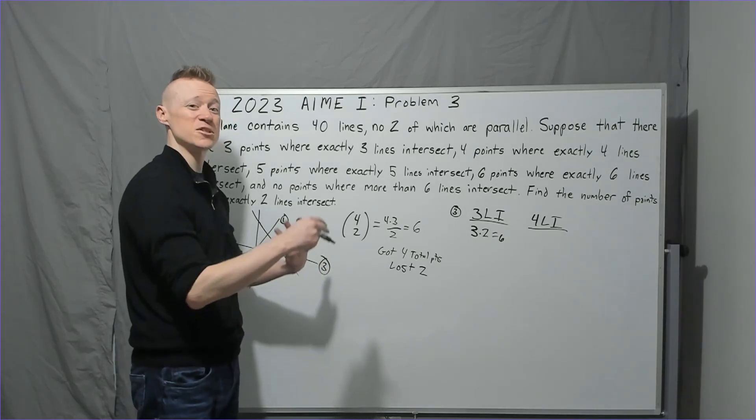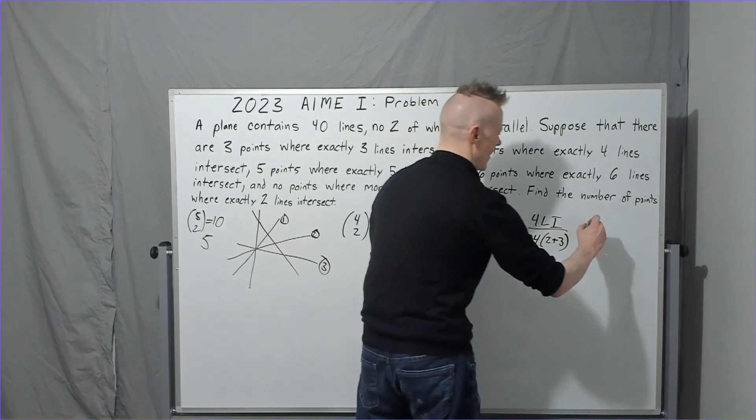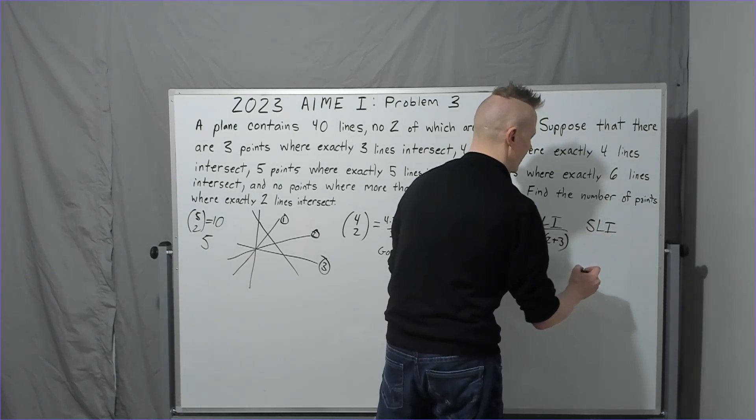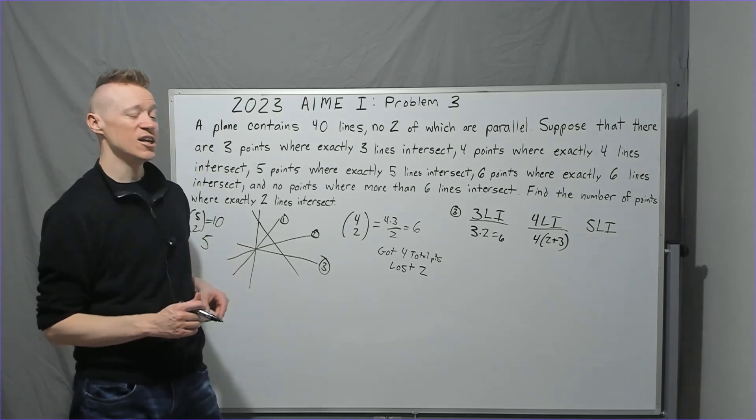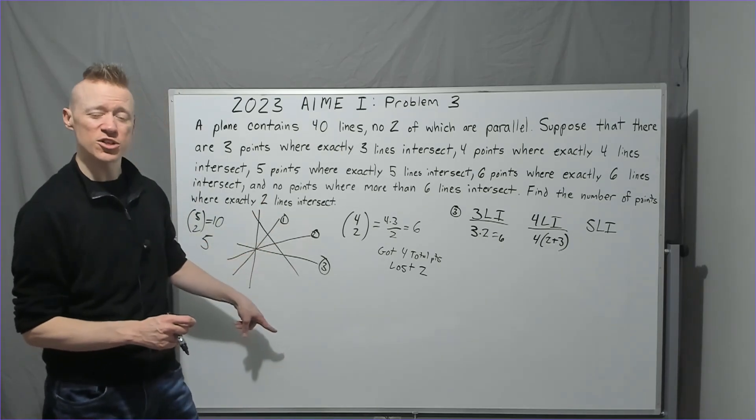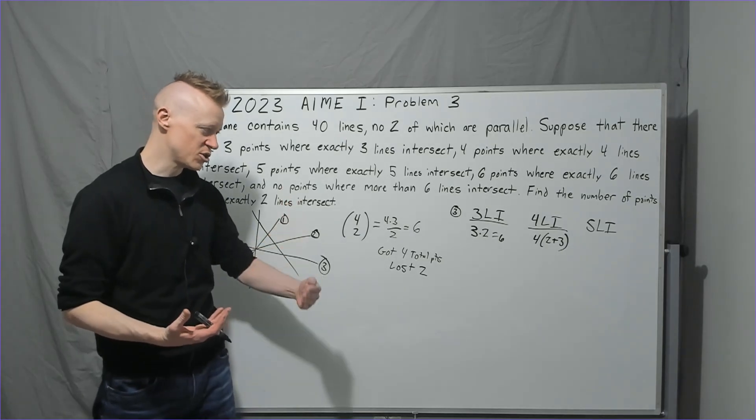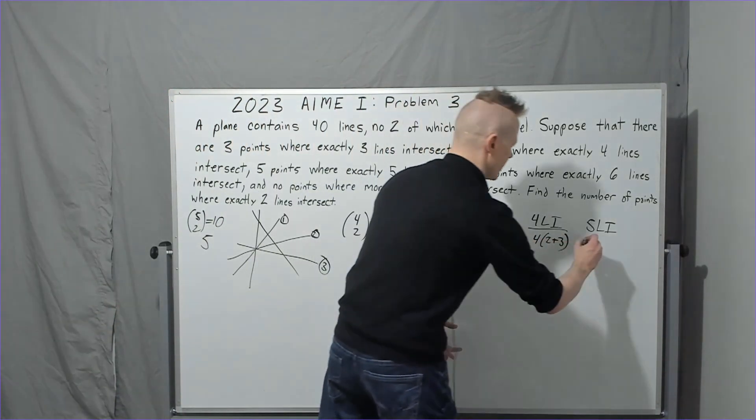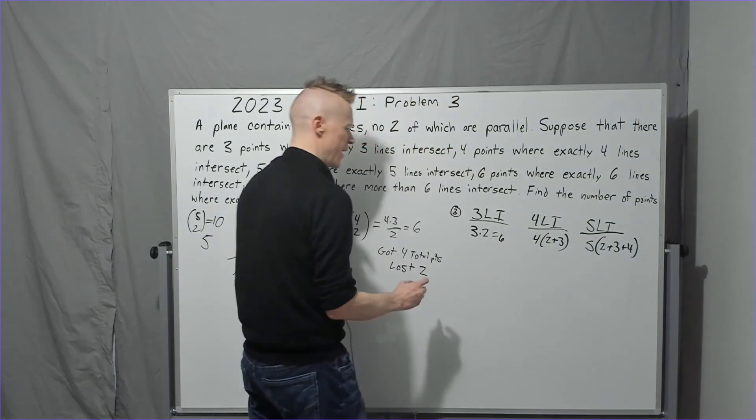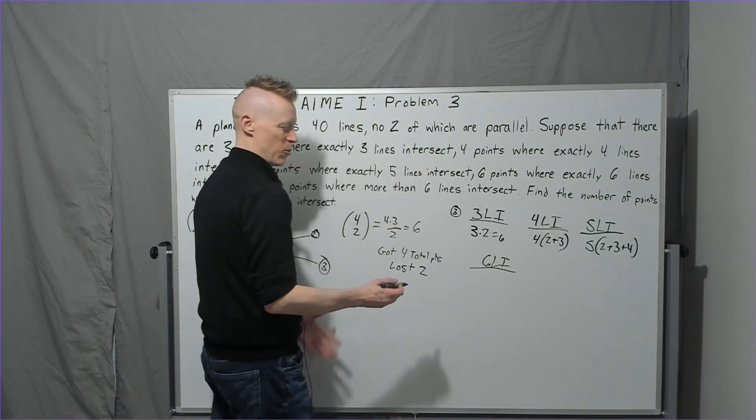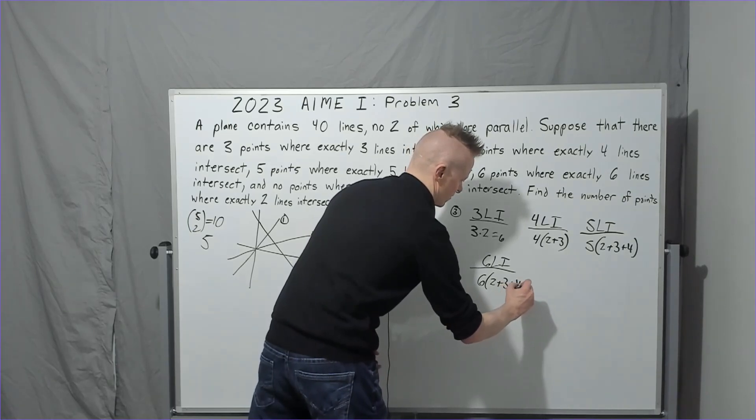So it's going to be four times two plus three. And we kind of have the idea now of what's going on for five lines of intersection. Every time you have that point or five lines intersecting at a single point, when that happens, you're not just going to lose the four that you just crossed over. You're also losing these two and these three that we had from the previous ones. So you're going to lose two plus three plus four. So we can say then that we have five times two plus three plus four. Now what about six lines of intersection at one point? For that one, you're going to lose six times two plus three plus four plus five.